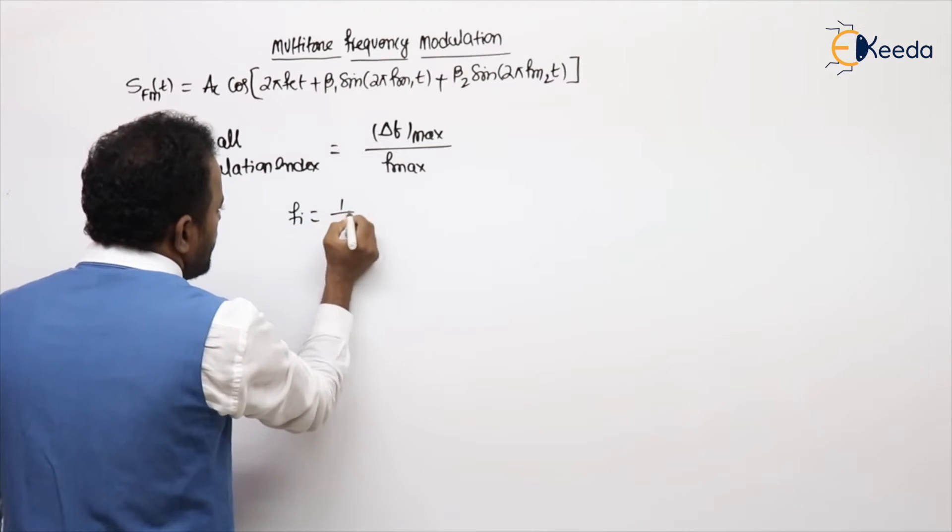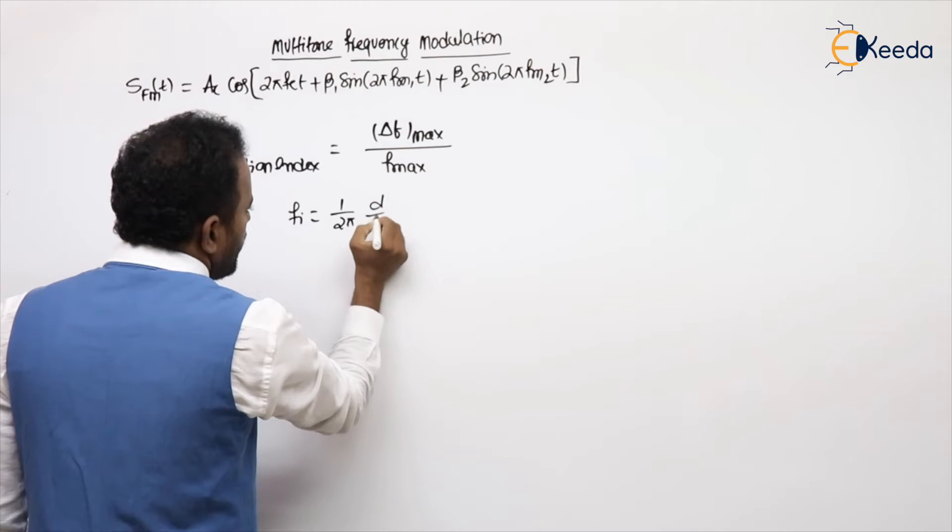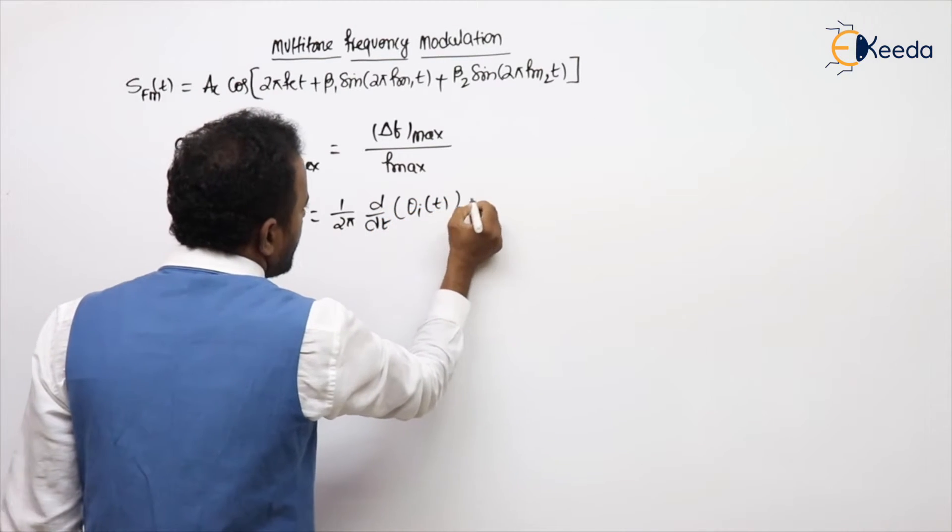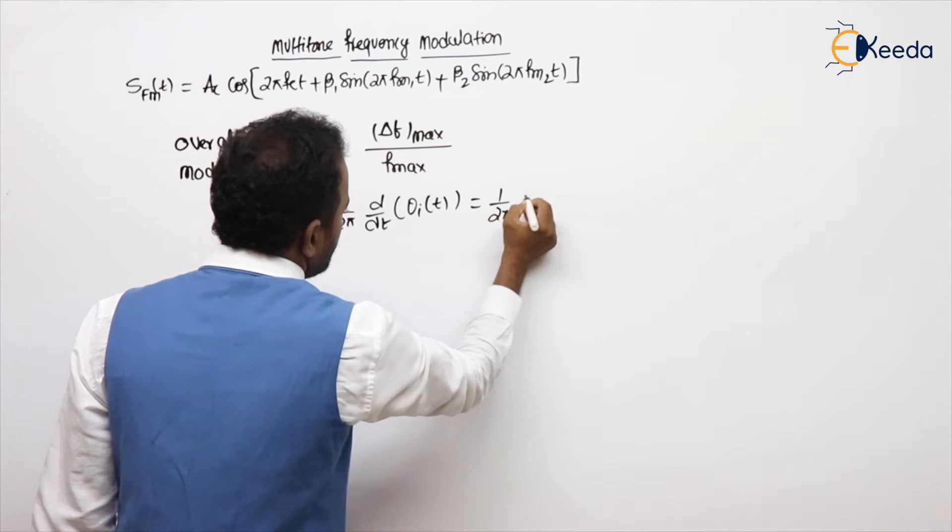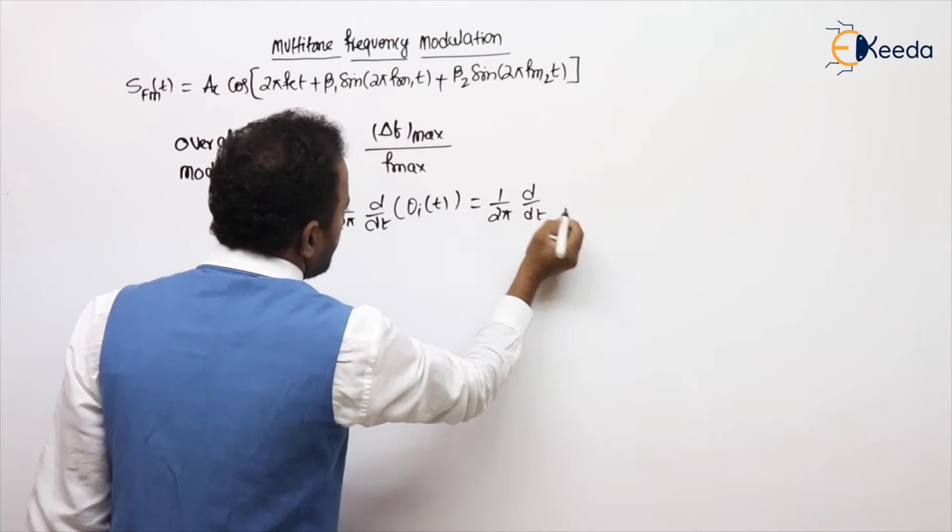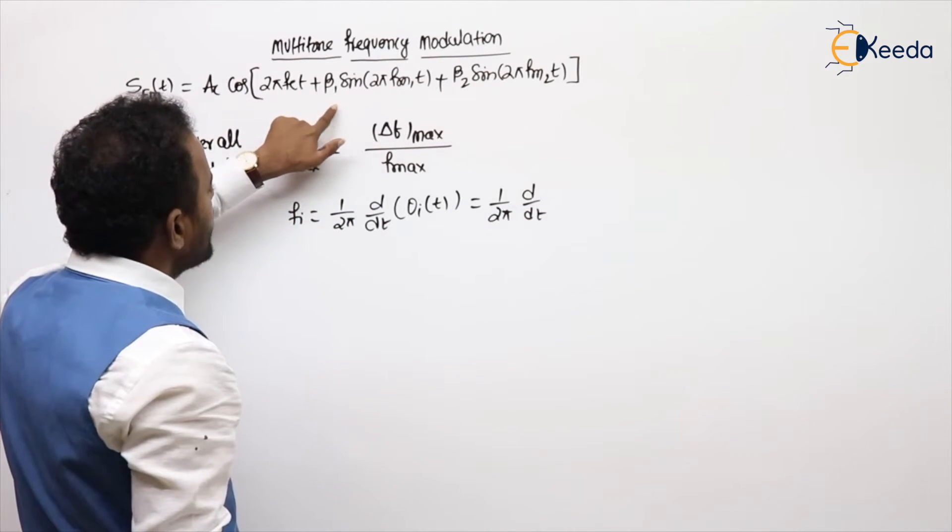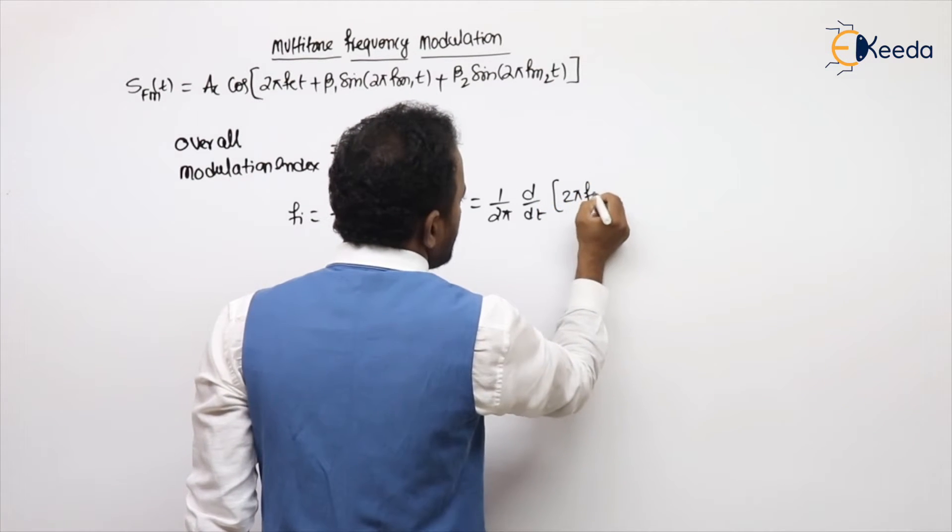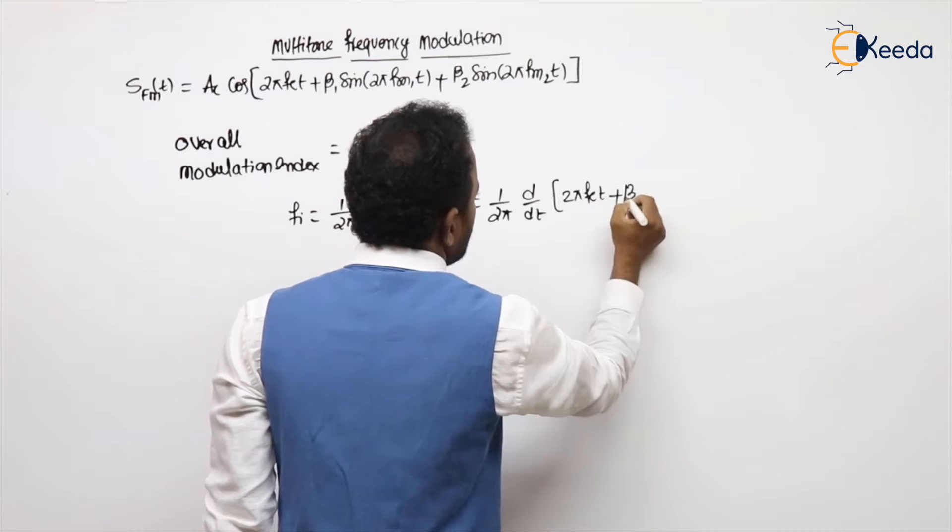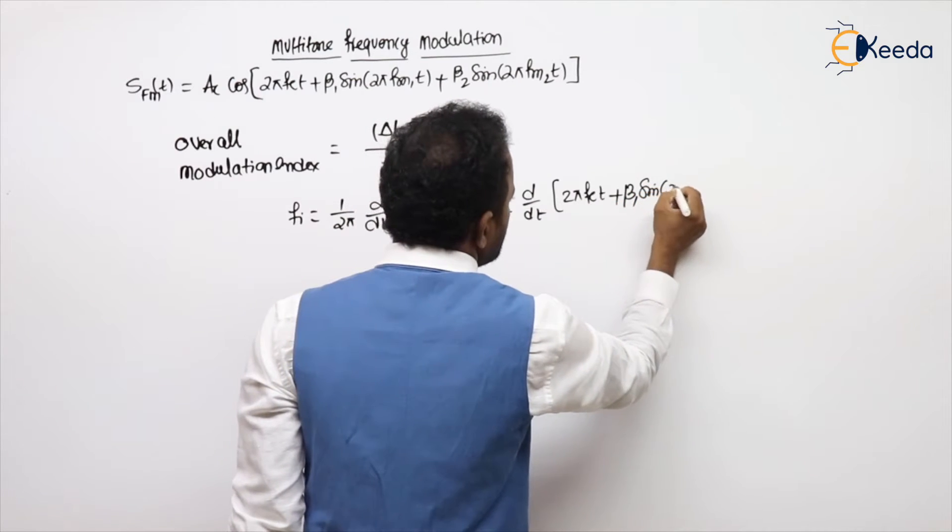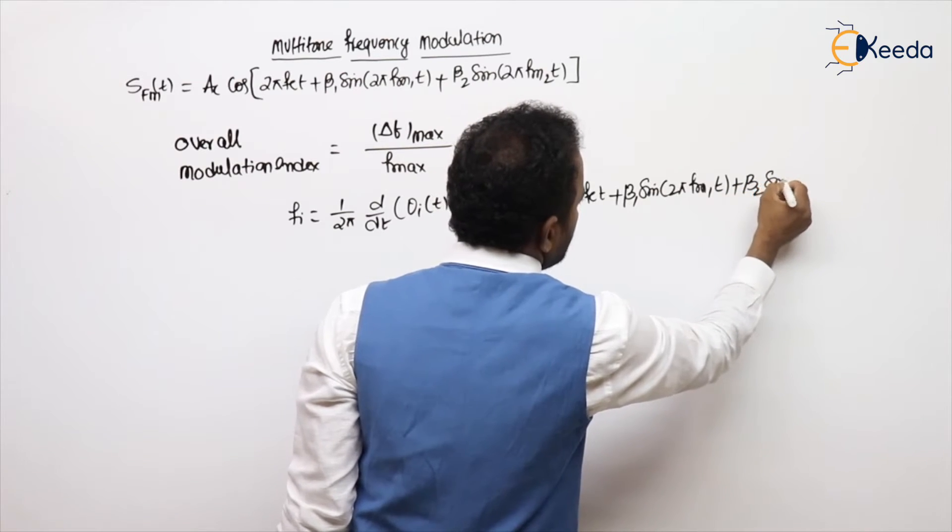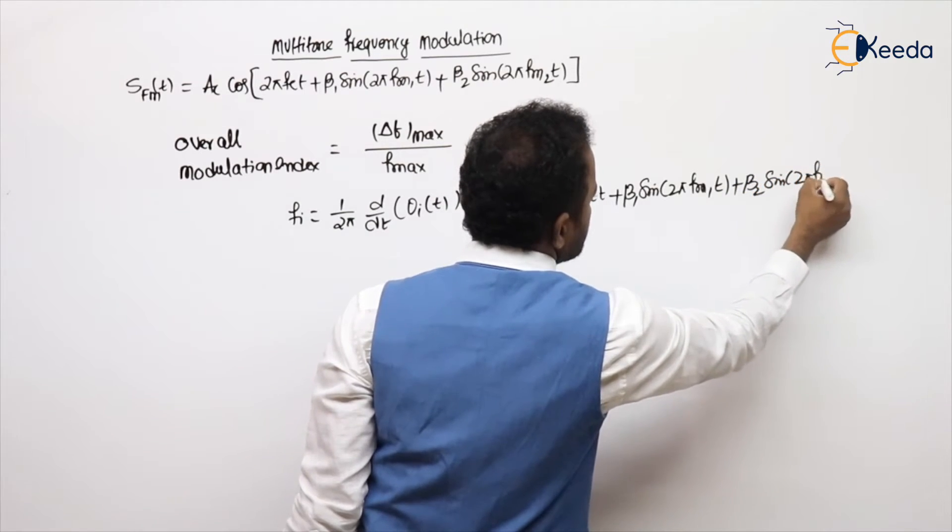What is the fi formula? 1 by 2π d/dt of total angle of an angle modulated signal. What is the angle? 2π fc t + β1 sin 2π fm1 t + β2 sin 2π fm2 t.